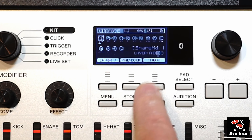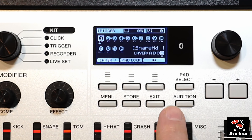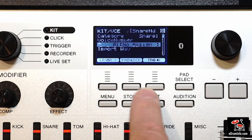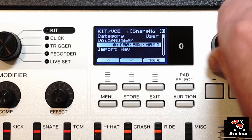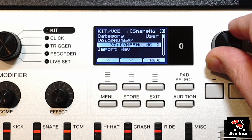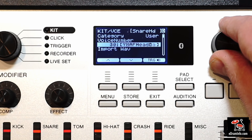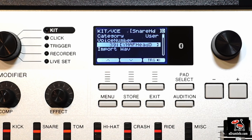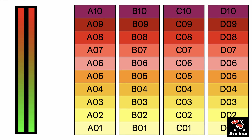Now press TRG F3 and press layer F1 to select layer D. Without hitting the pad, press exit, change category to user and voice number to where you have put your snare head user voice D voices. You have now added layer D, the fourth round robin or repeating sample onto your snare head.